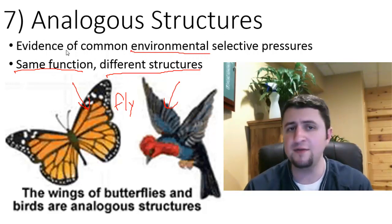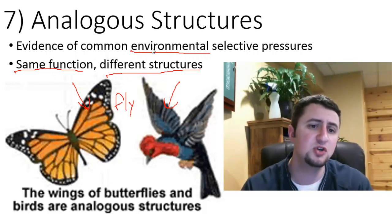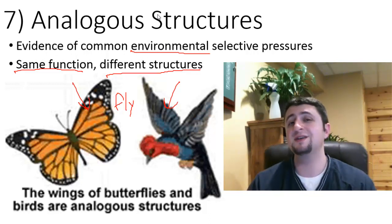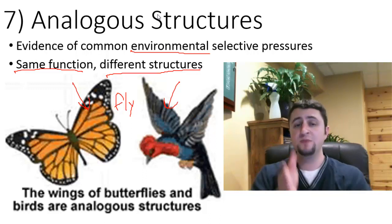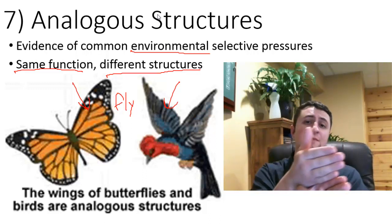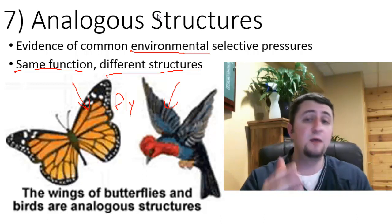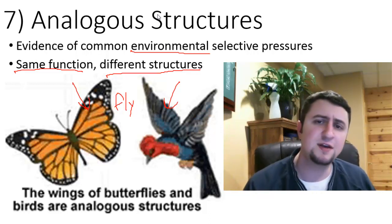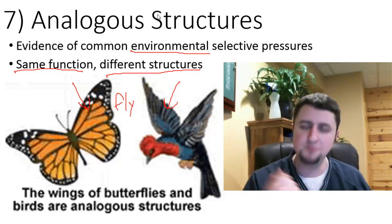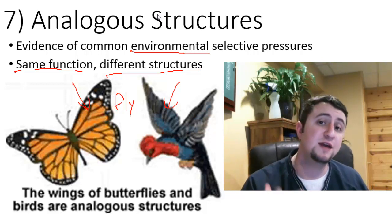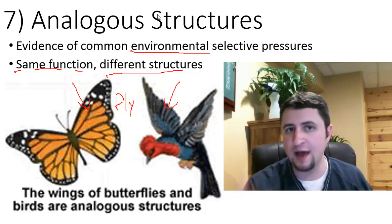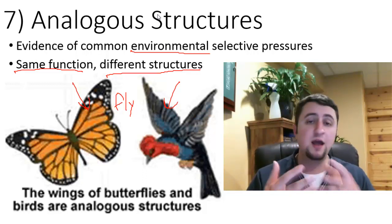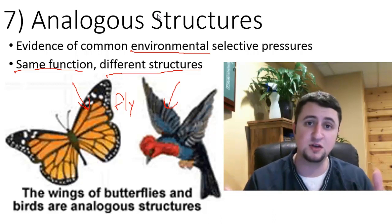Analogous structures don't really indicate close common ancestry, because an insect and a bird are on very opposite sides of the spectrum — farther apart on the family tree. However, they both have one thing in common: where they live, their environment. Analogous structures are evidence of evolution in the sense that they show adaptation to similar environments. Another great example is comparing a shark tail to a whale tail. Shark tails go left and right and are made of cartilage; whale tails go up and down and are made of bone. But both sharks and whales live in the water, so Mother Nature selected for adaptations — like tails — that allow them to swim.